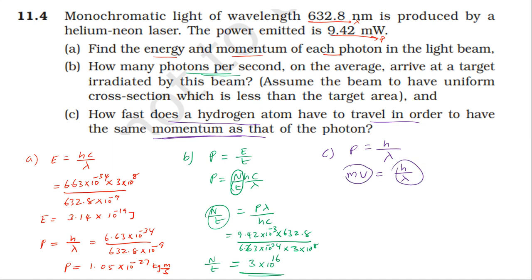Part c: velocity of hydrogen. Velocity equals h by lambda times m. H is 6.63 times 10 power minus 34 divided by lambda 632.8 times 10 power minus 9 times mass of hydrogen, approximately mass of proton, 1.67 times 10 power minus 27. Velocity equals 0.63 meter per second.